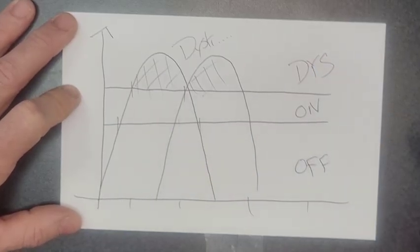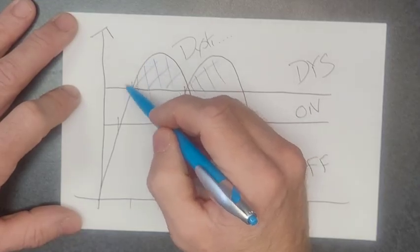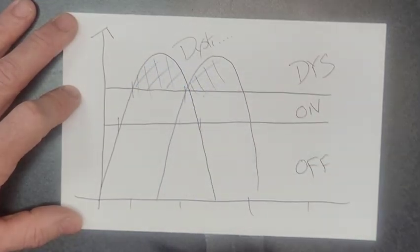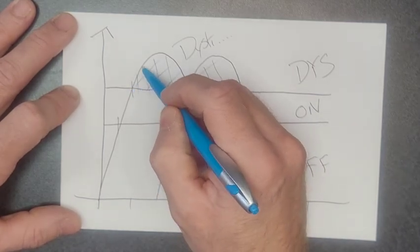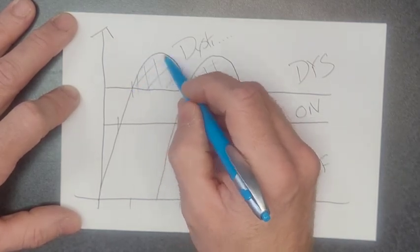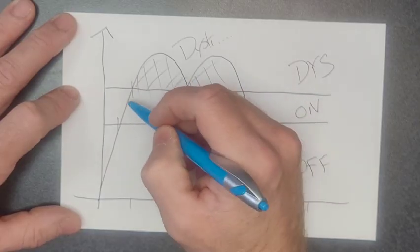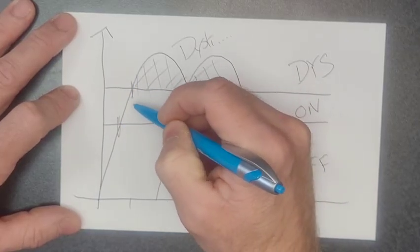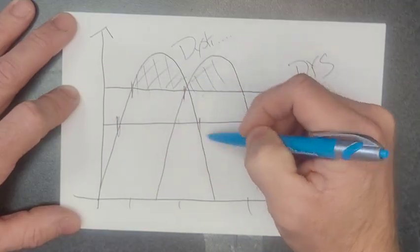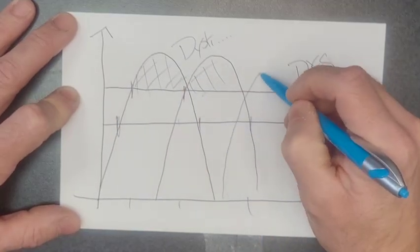That second target of DBS targets these dyskinesias. It's the GPI target, the globus pallidus internus. The idea behind that is it eliminates, or at least reduces, the side effect of this dyskinesia here. So, you're able to, instead of just getting these little two short bands out of your dosage, you get all of this dyskinesia and everything is considered on-time.